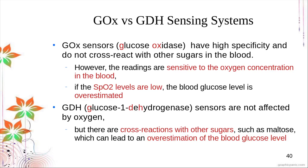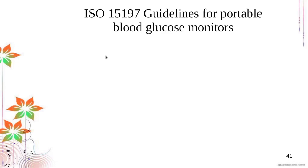In the Philippines, the most common is the GOX sensor. Because it is sensitive to oxygen, the usual practice is to measure SpO2 levels first and then perform glucose monitoring. If you have low SpO2, it is not advisable to use the GOX sensor. Glucose sensors are prevalent due to the prevalence of diabetes, and we have ISO 15197 guidelines for portable glucose monitors.